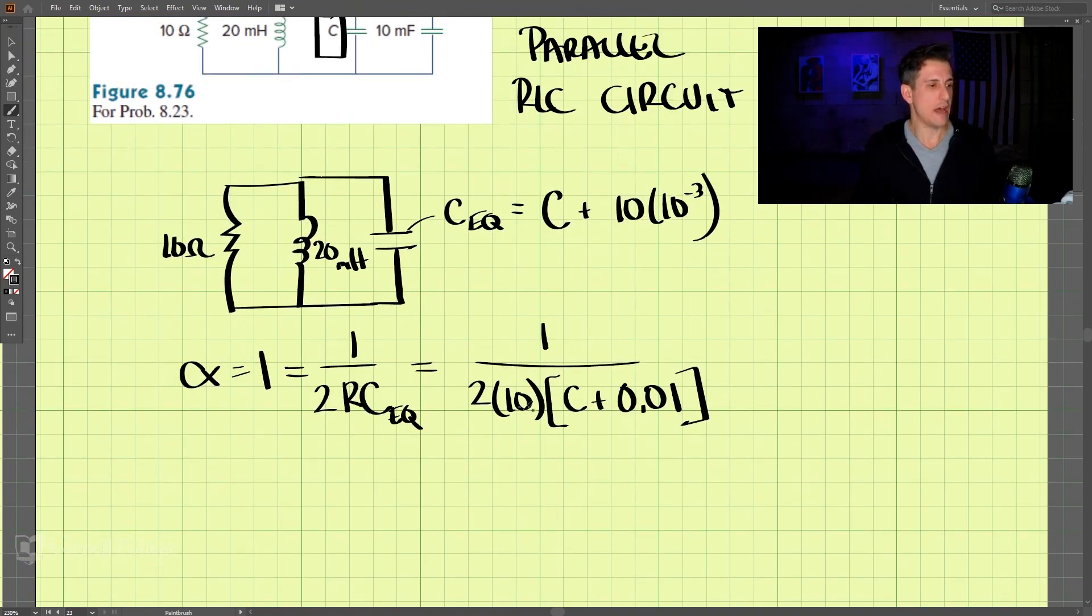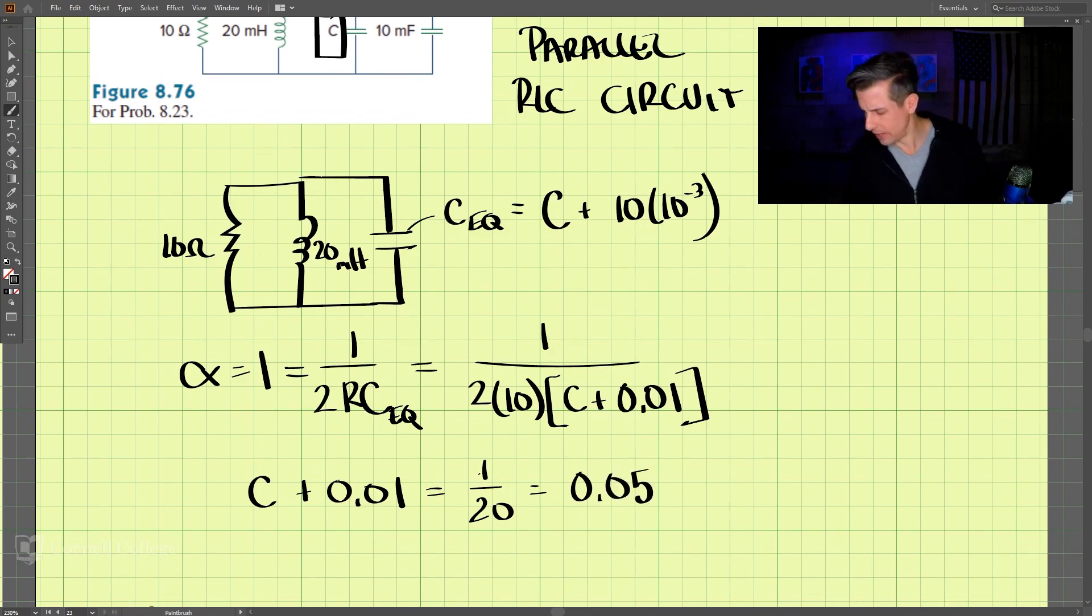So what we have is C plus 0.01 is equal to 1 divided by 20, which is 1 divided by 20, which is equal to 0.05.